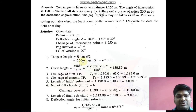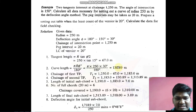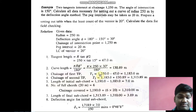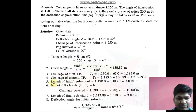First bit is tangent length, which we can easily calculate as R × tan(φ/2). We have the radius and the angle, and the answer is 67.0 meters. Next is curve length — same formula: π × R × φ / 180. Substitute the values and you get the answer. Chainage of T1 is calculated using the formula already mentioned in the previous video. Next is chainage of the second tangent point T2.